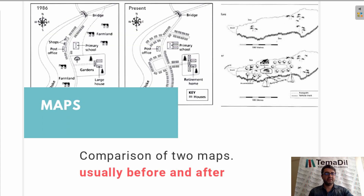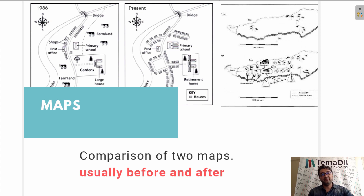The second task is maps. We usually compare two maps in our writing, and as you can see from the samples here, we are usually given two cities, towns, or countries in different years — usually past and present, or sometimes present and future like projections. What we are asked to do is to compare these two maps and write the differences or the similarities.